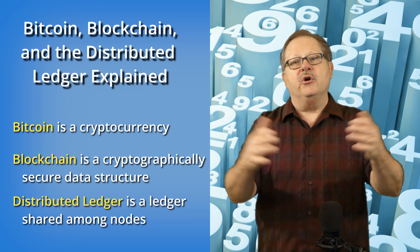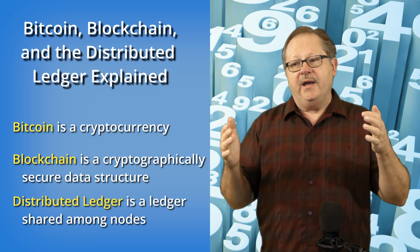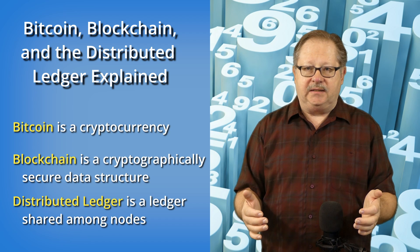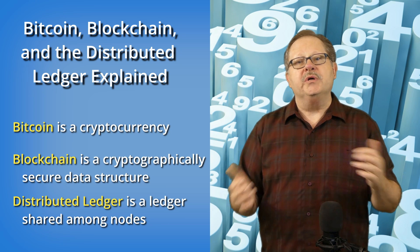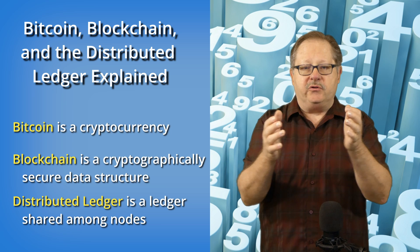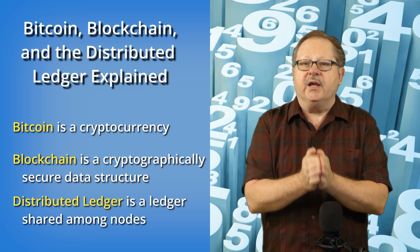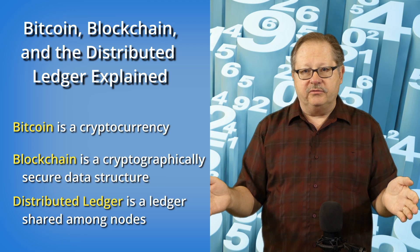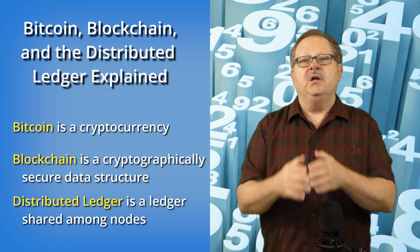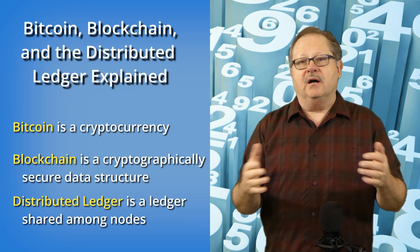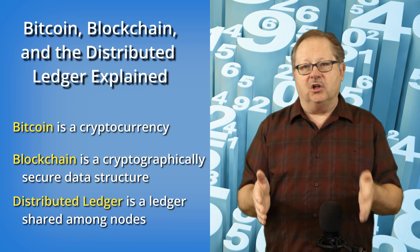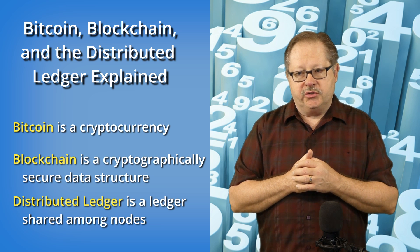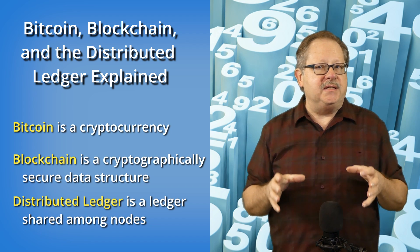The distributed ledger is a ledger that's kept on all the nodes in the network, and that distributed ledger contains a full ledger of all the data. Those ledgers are always in agreement. So when a transaction is sent to the network and is validated, it goes out to all of the ledgers on the network and all the ledgers agree on the validity of all those transactions.